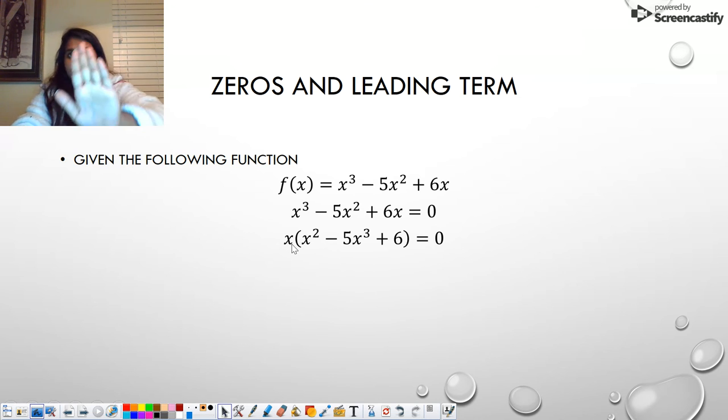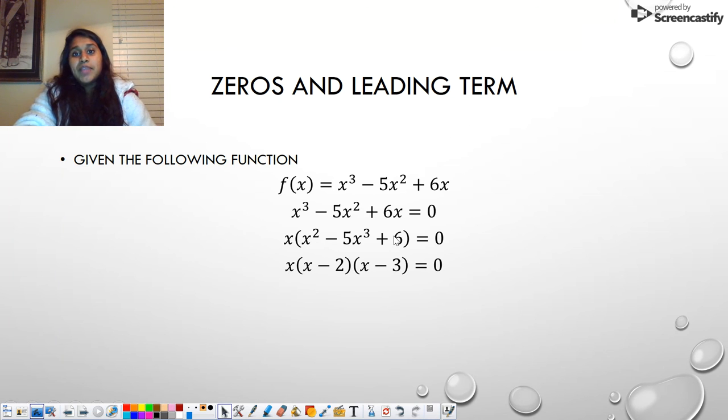Now I can ignore that X for a moment. I can literally just cover it up and ignore that X on the outside and I can focus on factoring the inside. So that's what I did. I found factors of six that would get me to negative five. So negative two times negative three gets me positive six. Negative two X plus negative three X gets me negative five. So that is correct.